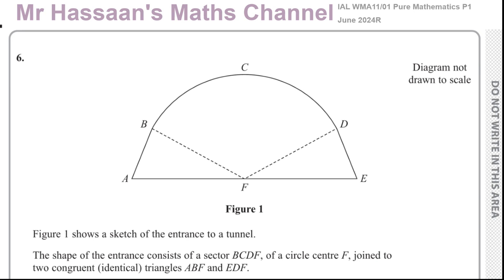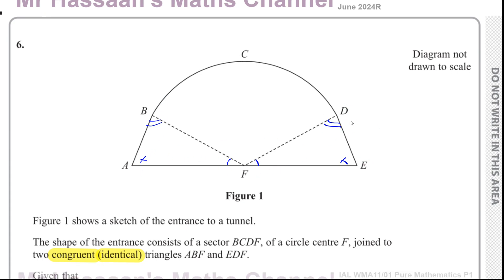The sector is joined to two congruent — that is, identical — triangles ABF and EDF. They're exactly the same shape and size. So the corresponding angles are equal: this angle here equals this angle here, and all the corresponding sides are equal — BF equals FD, AF equals FE, and AB equals DE. That's what we can deduce from the congruent triangles.